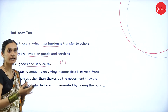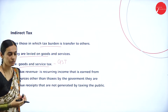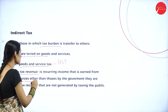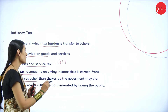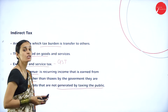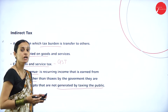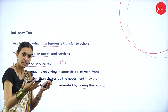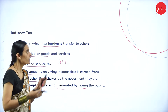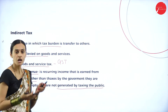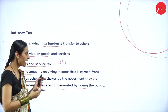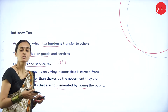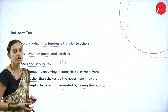Tax revenue has two types: direct taxes and indirect taxes. Non-tax revenues are recurring income earned from sources other than taxes by the government — they are revenue receipts not generated by taxing the public. Examples of non-tax revenues include fees, penalties, interest receipts, fines, and grants. So there are two important types of public revenue: tax revenues and non-tax revenues. Under tax revenues there are direct taxes and indirect taxes, while non-tax revenues — which are not compulsory contributions — include fees, fines, penalties, and interest receipts.